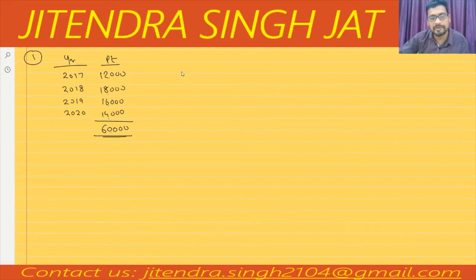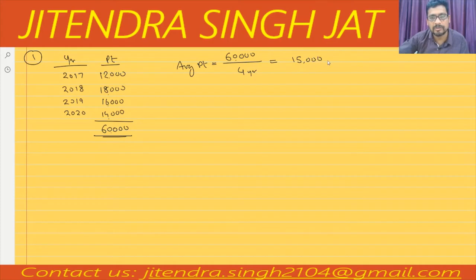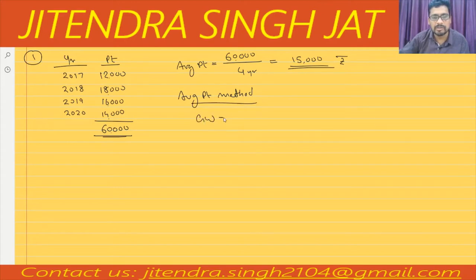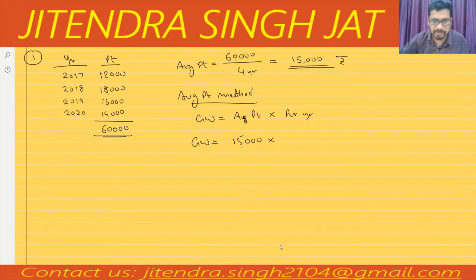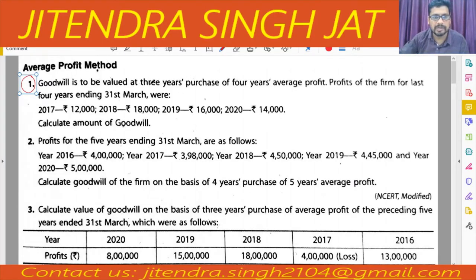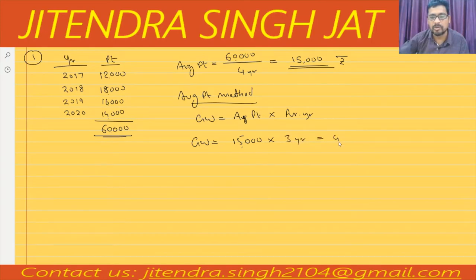We can easily calculate average profit: average profit equals total profit divided by number of years. Total profit is 60,000 divided by 4 years, so 15,000 is the average profit. By average profit method, goodwill equals average profit of 15,000 multiplied by three years purchase, which equals 45,000.